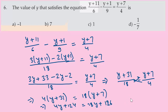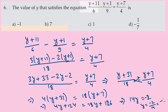Rearranging: 18y minus 4y equals 124 minus 126, so 14y equals minus 2, giving y equals minus 2/14, which simplifies to minus 1/7. Option D, minus 1/7, is the correct answer.